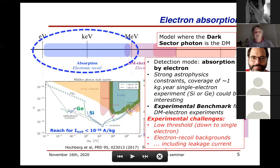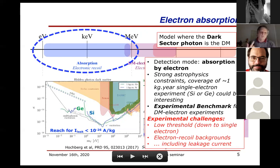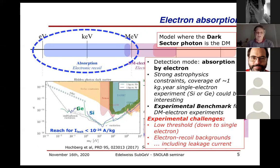Once you are looking for electron signals and reducing your electron recoil background, you can also test models where the dark photon is itself the dark matter particle, and you detect it because it's entirely absorbed by an electron in your detector. This is a difficult search because you have to be more sensitive than the astrophysics constraints. Studies showed that a one-kilogram-year experiment with single-electron capabilities in silicon or germanium could be interesting.